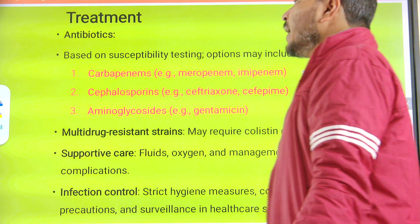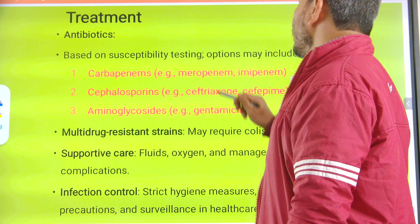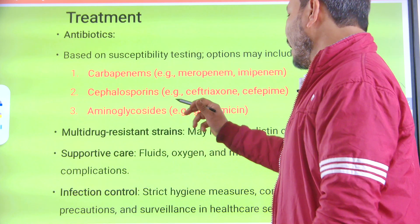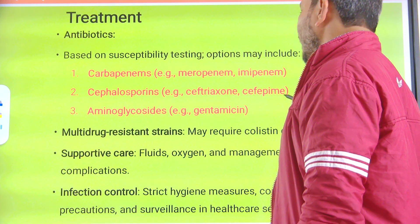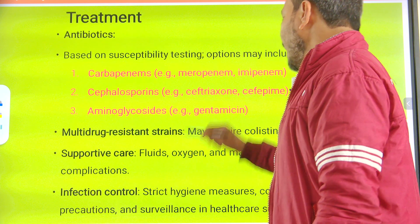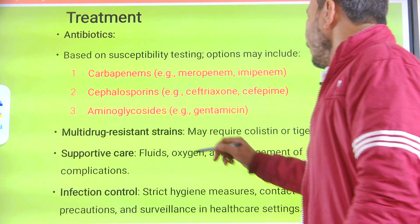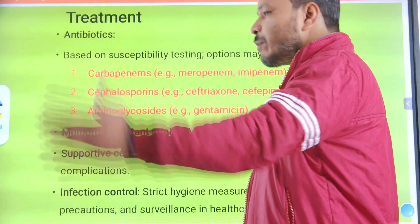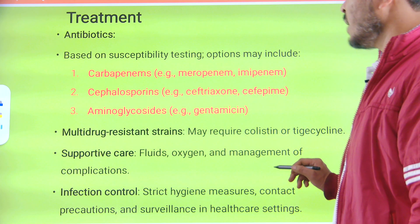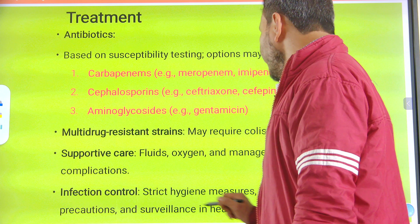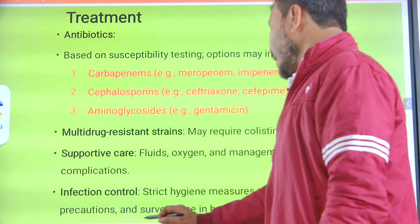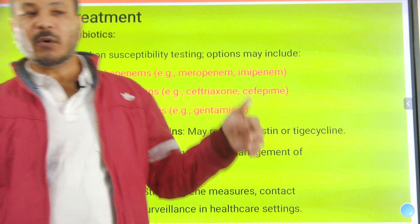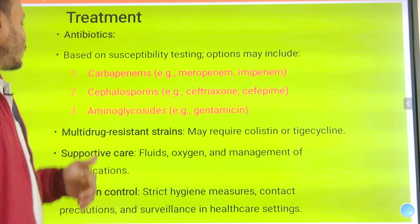Treatment is based on susceptibility testing; options include carbapenems (meropenem or imipenem), cephalosporins such as ceftriaxone and cefepime, and aminoglycosides such as gentamicin. Multi-drug resistant strains may require colistin or tigecycline. Supportive care includes fluids, oxygen, and management of complications. Infection control requires strict hygiene measures, contact precautions, and surveillance in healthcare settings. This concludes the discussion of Klebsiella pneumoniae and Klebsiella oxytoca.